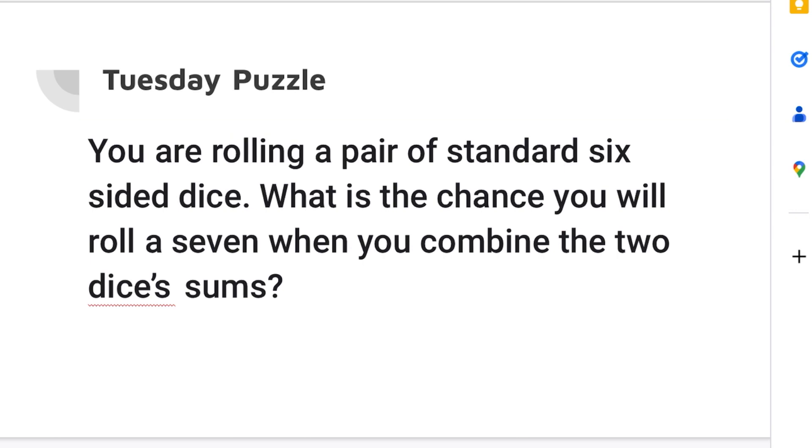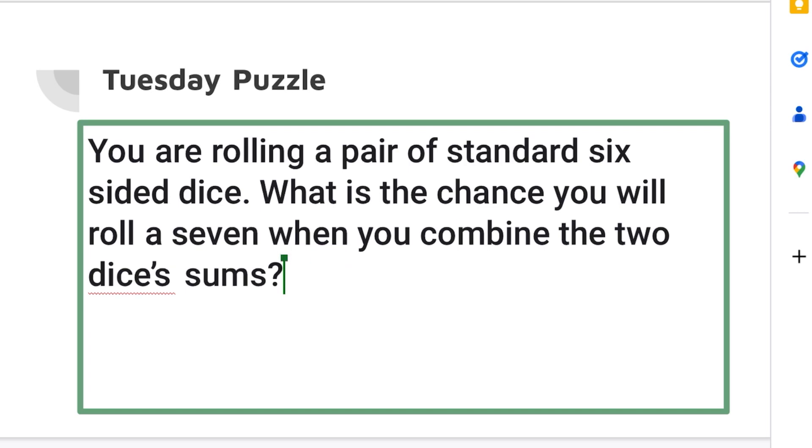So what we can do is we can just make a list of every possibility or we could use the factors that will actually make up to seven. So there's going to be one plus six, there's going to be two plus five, and there's going to be three plus four and all of the ones with the opposite.